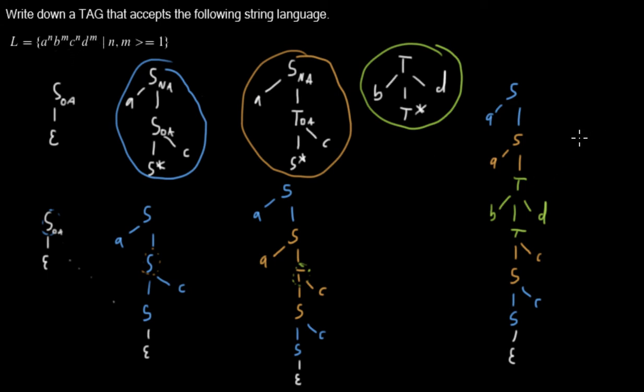So I hope I could give you an understanding of how tree adjoining grammar works. And this is the tree adjoining grammar for that string language with crossing dependencies. Thank you.